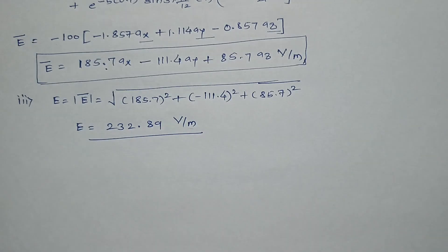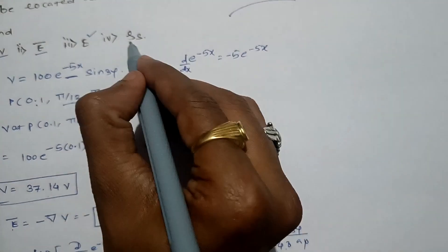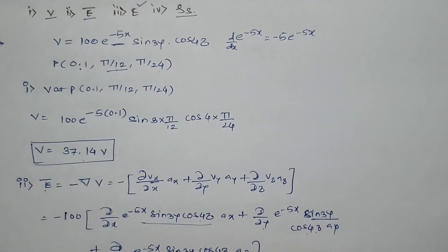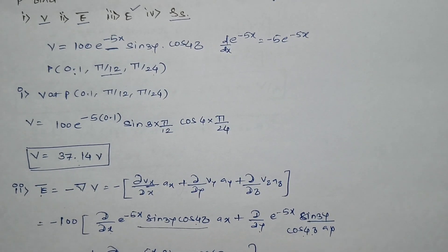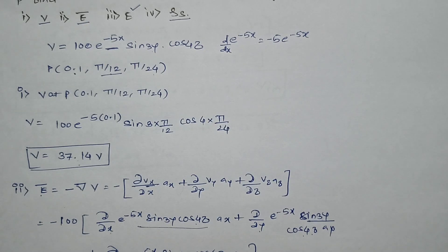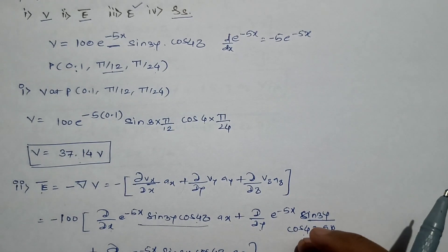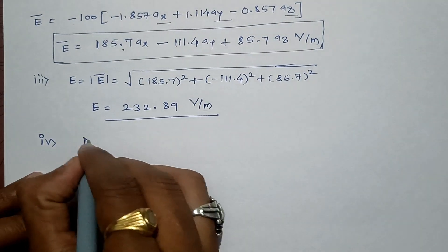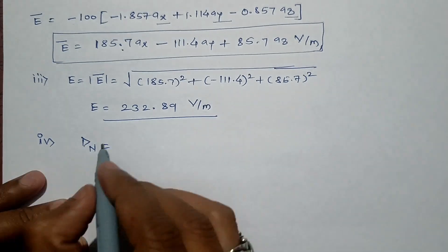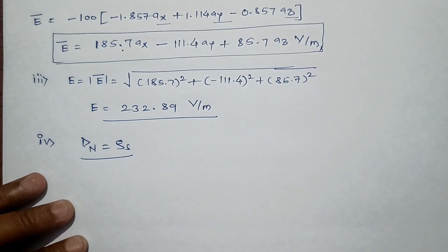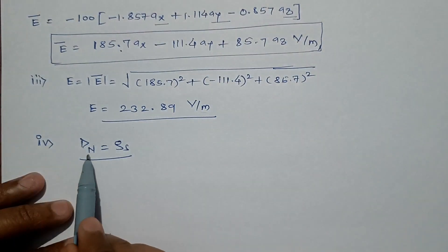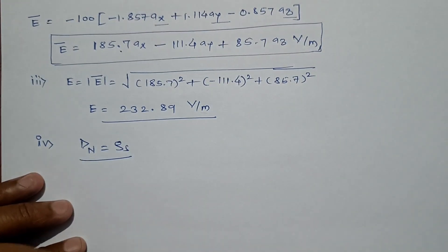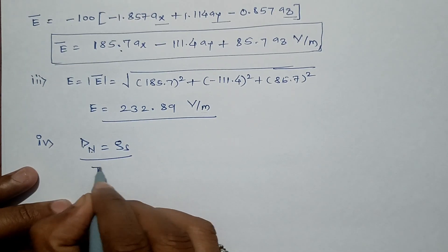The last question asks for ρs, the surface charge density, using the boundary condition. At the conductor-free space boundary, we use the Gaussian surface approach. The formula states that the normal component of electric flux density D⃗ equals ρs. D⃗ has a tangential component and a normal component: D⃗ = D_tangential + D_normal.